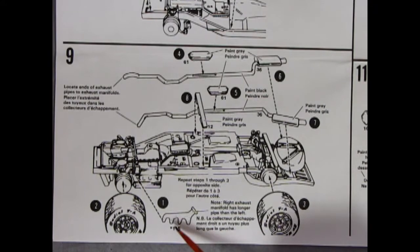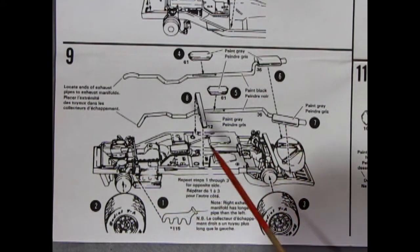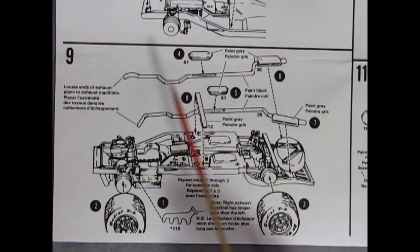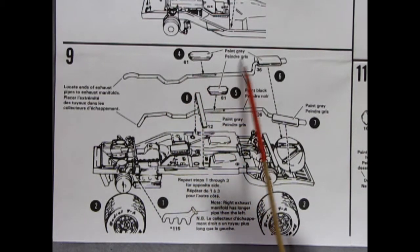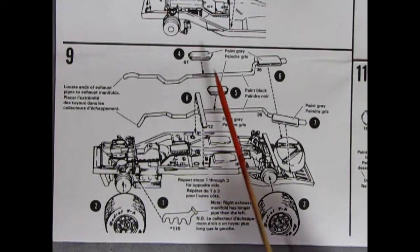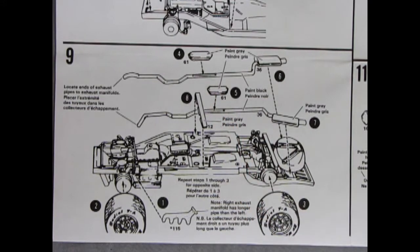Panel 9 shows our exhaust manifolds being glued onto the engine which is quite tricky in this location. And then here we have our cross brace and our exhaust pipes and mufflers with the catalytic converter which was all new for 1975. And then we have our wheels being glued into place.